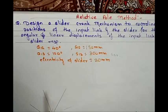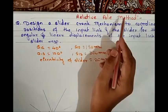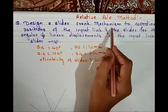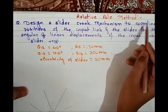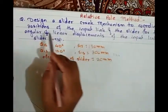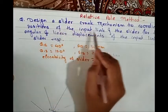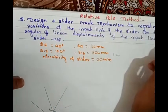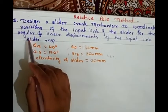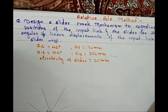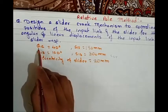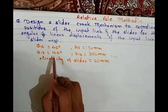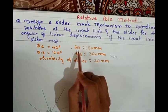Hello everyone. Here we are going to discuss design synthesis using the relative pole method for a slider crank mechanism. The question is: design a slider crank mechanism to coordinate three positions for input link and slider with the following angular and linear displacements. For the input link, the angular displacement is given as theta 1-2 equal to 40 degrees and theta 1-3 equal to 120 degrees.